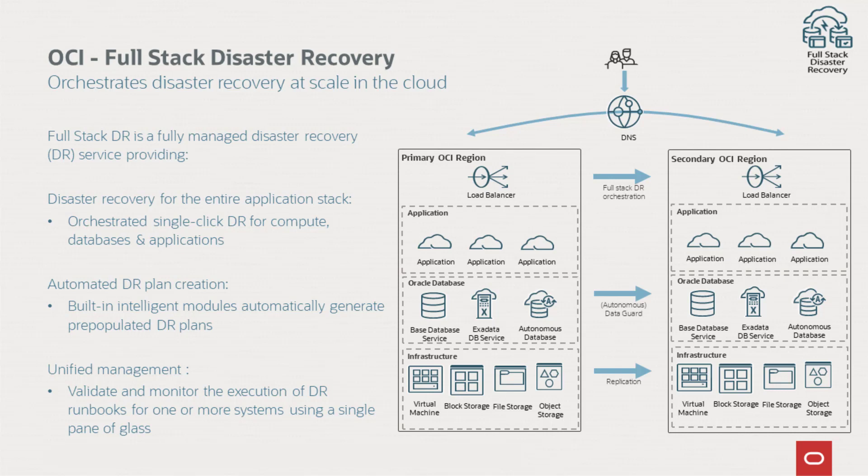You then create DR runbooks, which we call DR plans, at the click of a button. The DR plans are pre-populated with the appropriate built-in automation needed to recover the compute, storage, and databases you told us about. You can then validate your DR plans using our built-in pre-checks at any time without impacting your production systems.